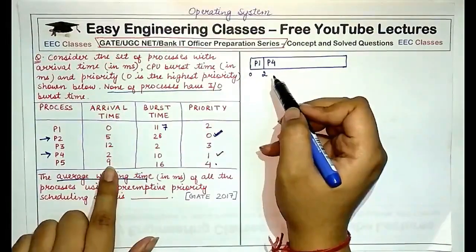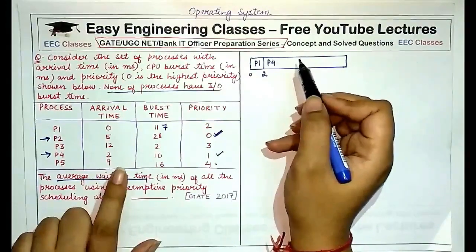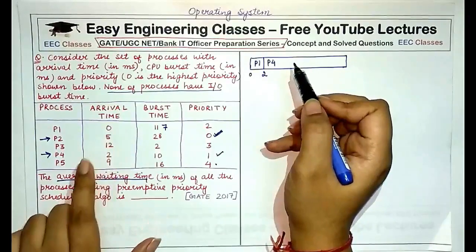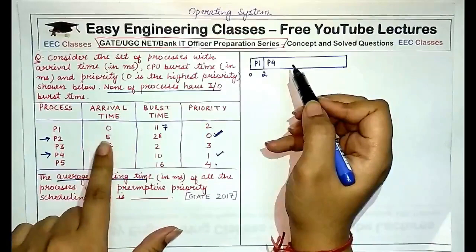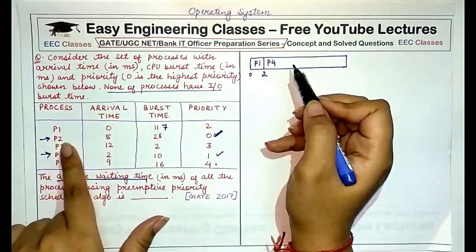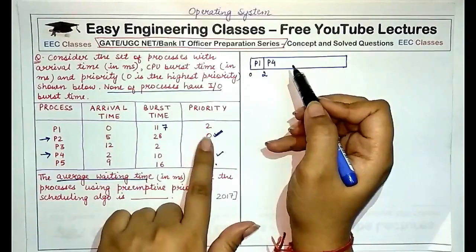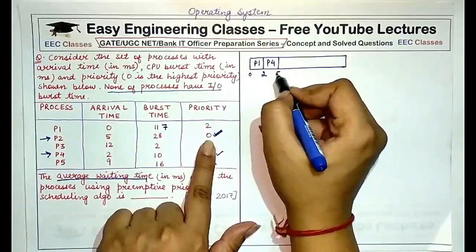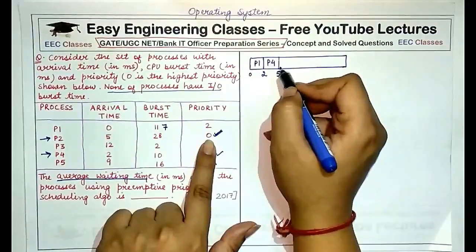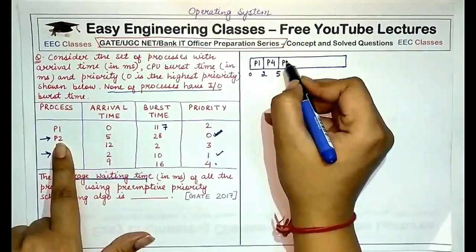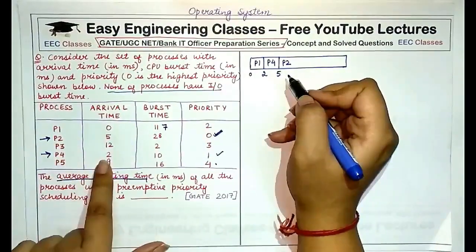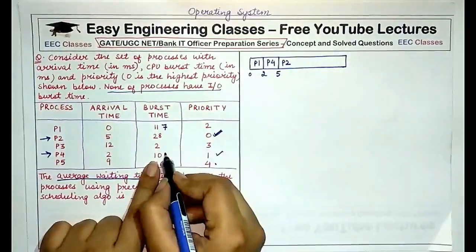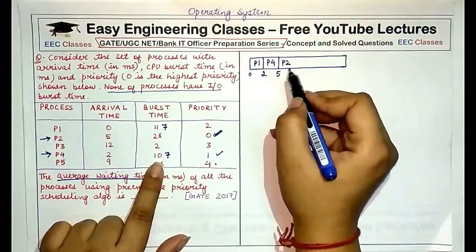P4 will continue execution until another process arrives or its burst time finishes. P4 had a burst time of 10 units. Another process, P2, arrives at time five with priority zero — the highest priority. So at time five we preempt P4 and start executing P2. P4 executed from time two to five, that means three units, so its remaining time is seven units.